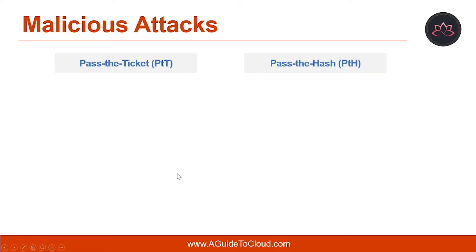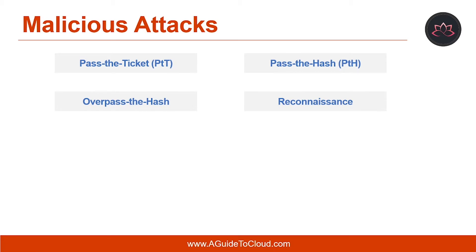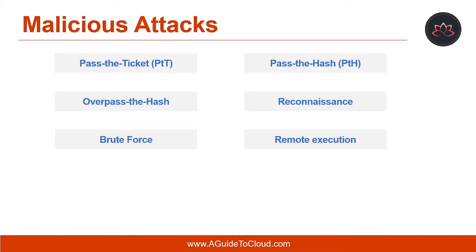The next one is pass the hash, or PTH. Pass the hash uses a technique in which an attacker captures account logon credentials on one computer and then uses those captured credentials to authenticate from other computers in the network to access resources. Third is overpass the hash, where an attacker takes the NTLM hash and uses it to obtain a ticket granting ticket through Kerberos Active Directory. Another type is reconnaissance — the scanning of a network to discover valid information to map out the environment. Brute force is an attack where attackers attempt to guess a user's password by authenticating with multiple passwords in a short period of time. Remote execution is where an attacker runs arbitrary code on a captured destination machine.